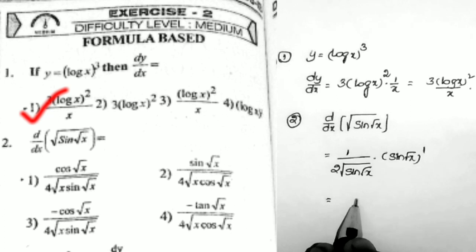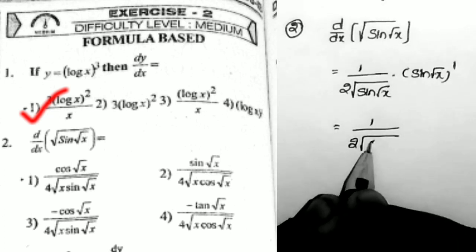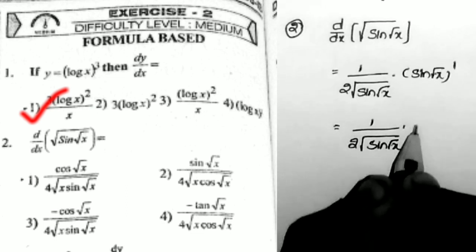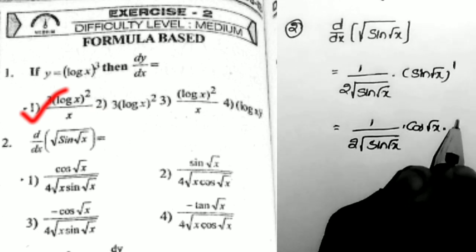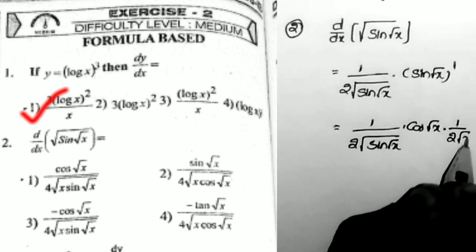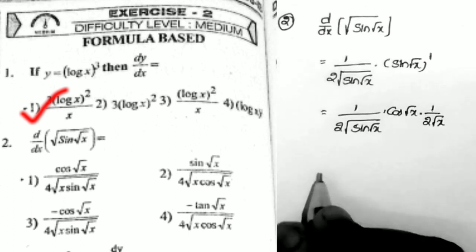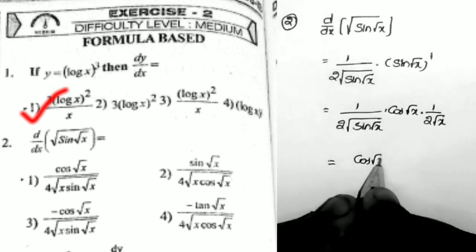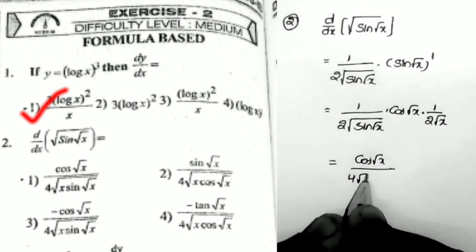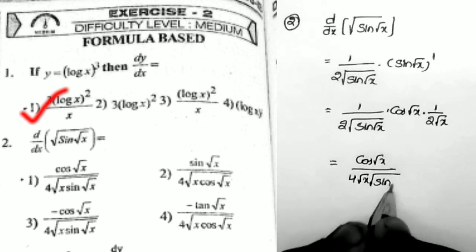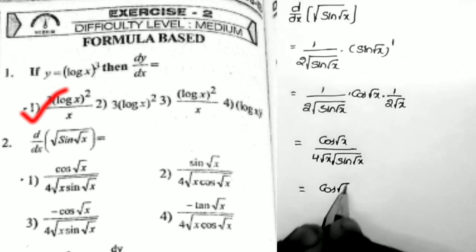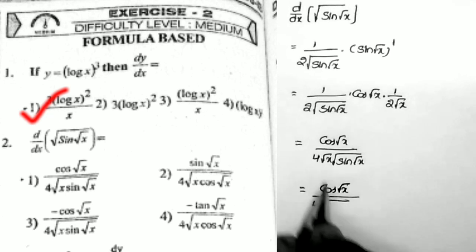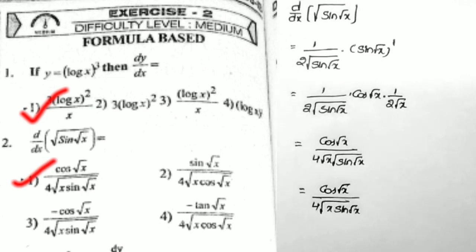That is: 1/(2√(sin√x)) · (derivative of sin(√x)) = cos(√x). Again, x here is √x, and the derivative of √x is 1/(2√x). So the answer equals cos(√x) / (4√(x · sin√x)), combining the two root values under a single square root. That is the first option.